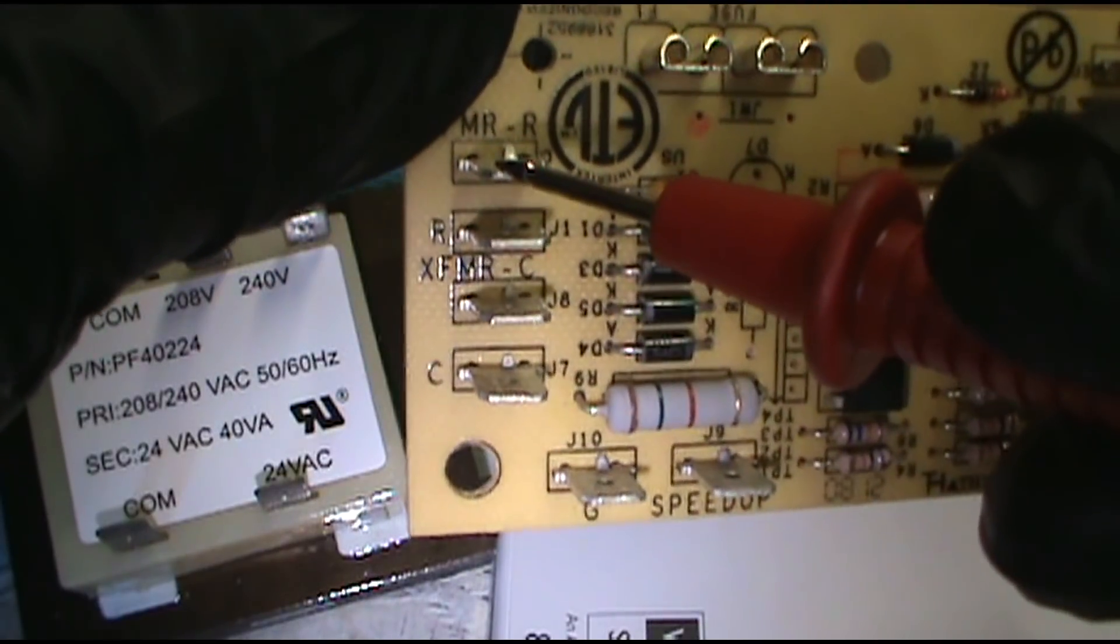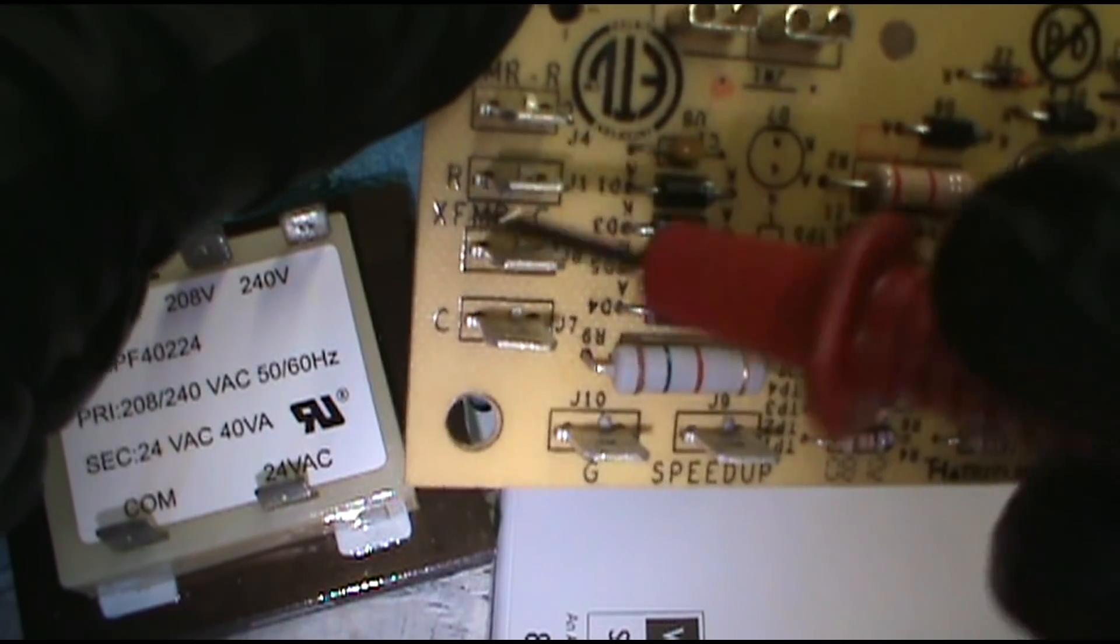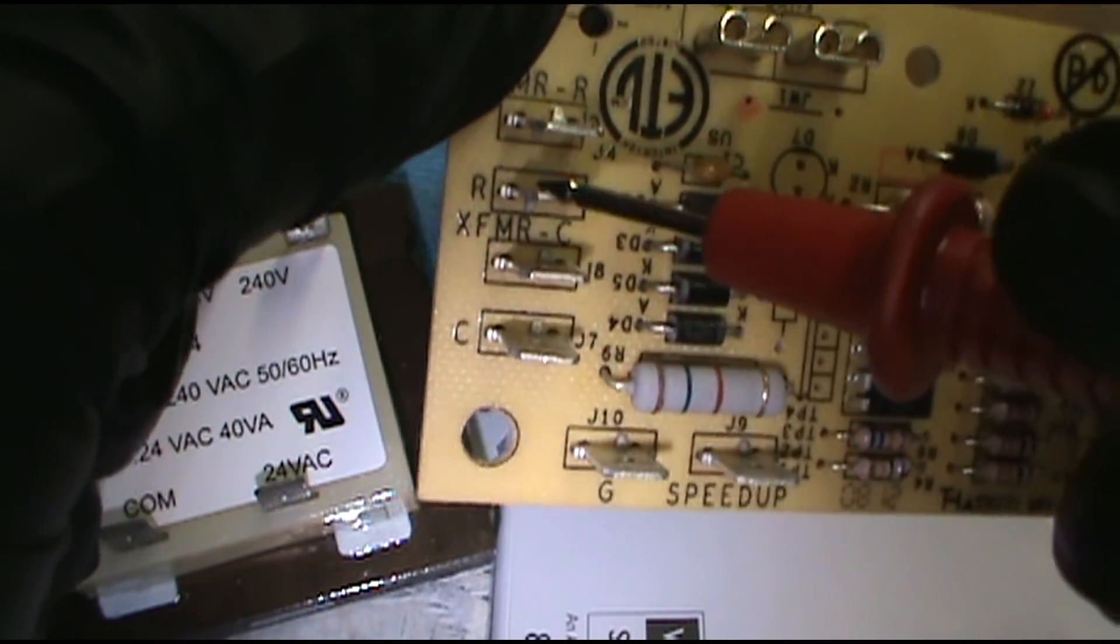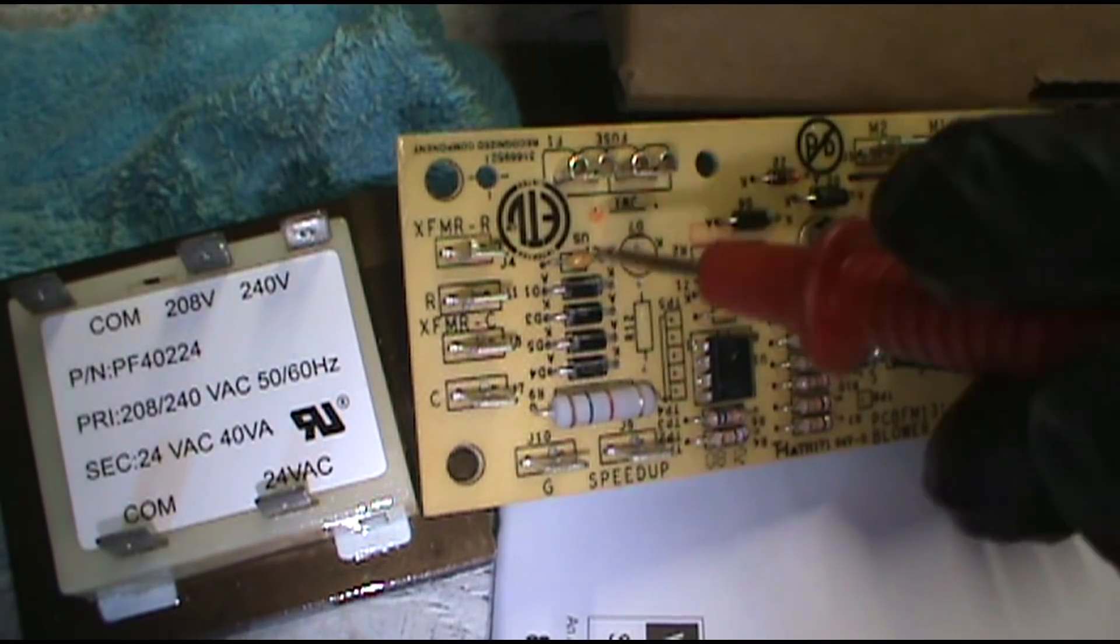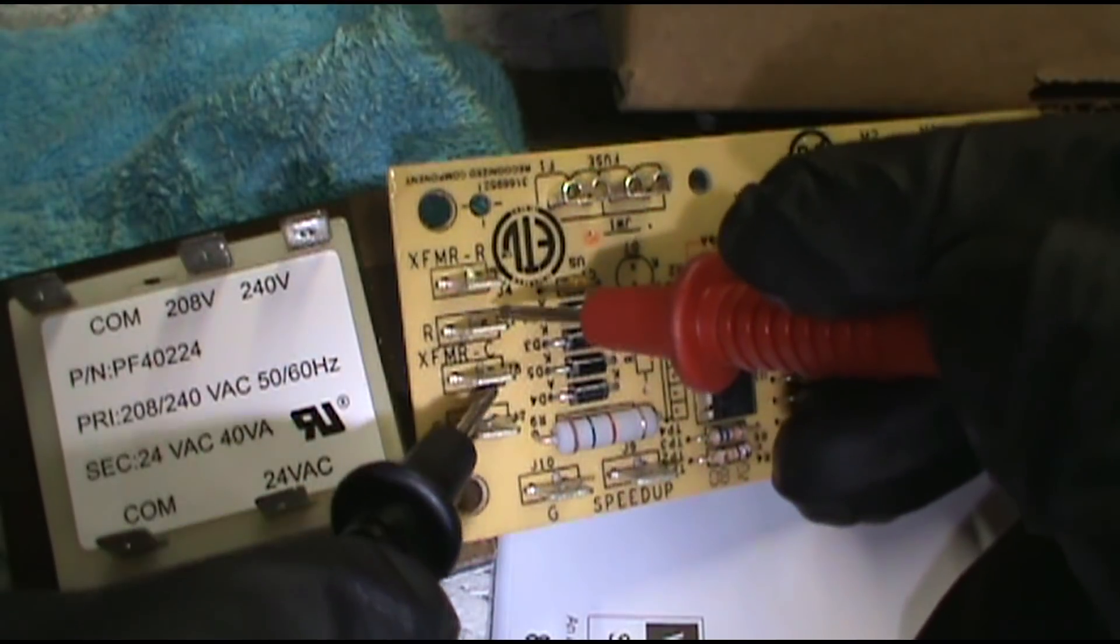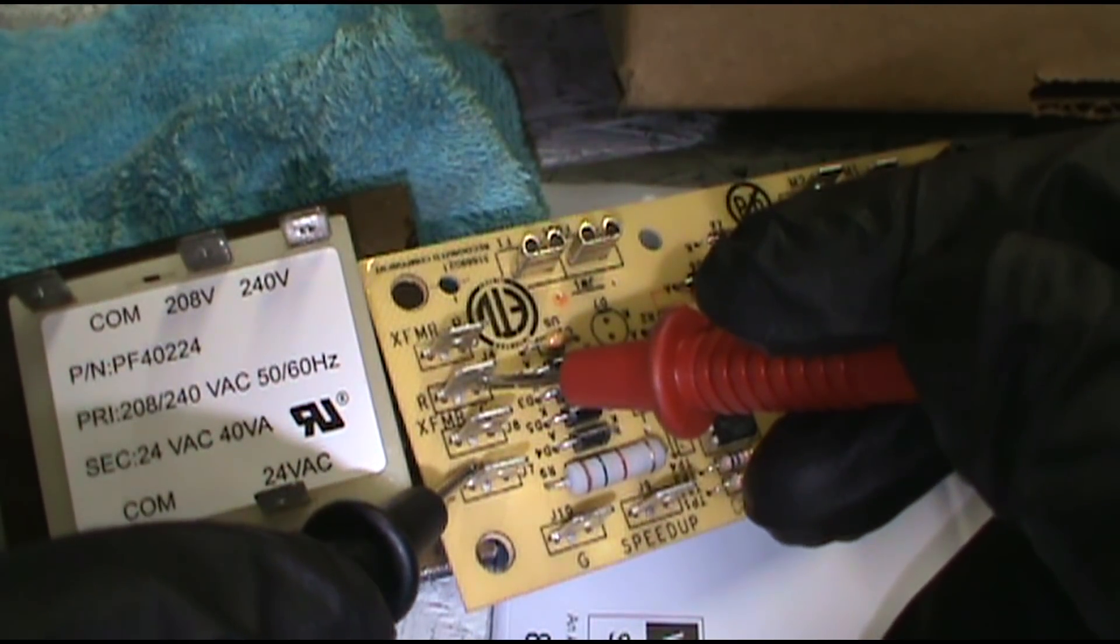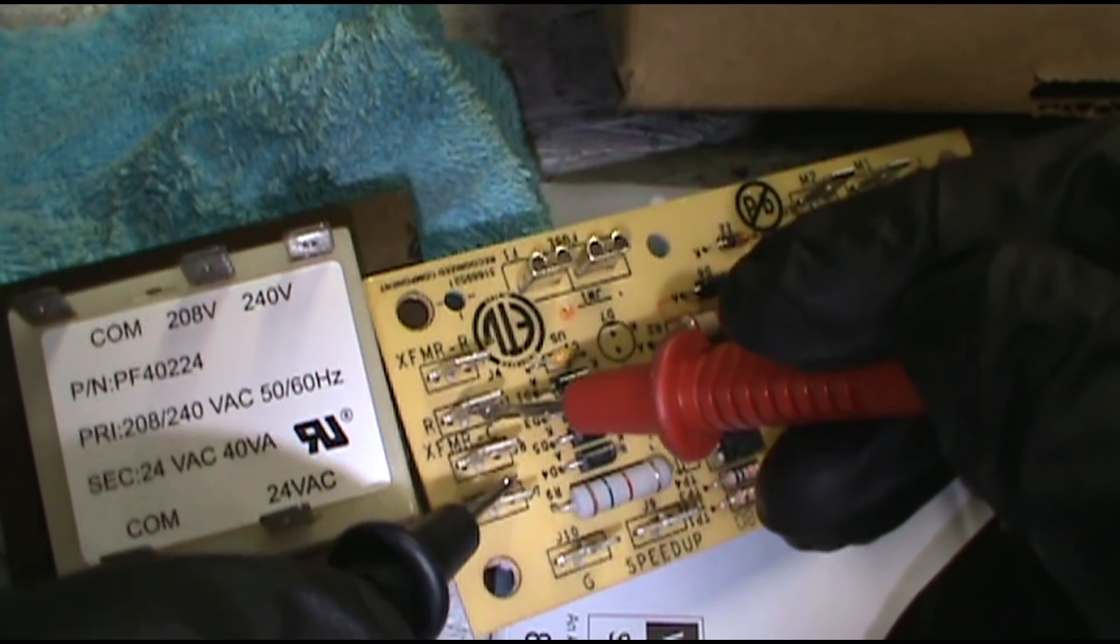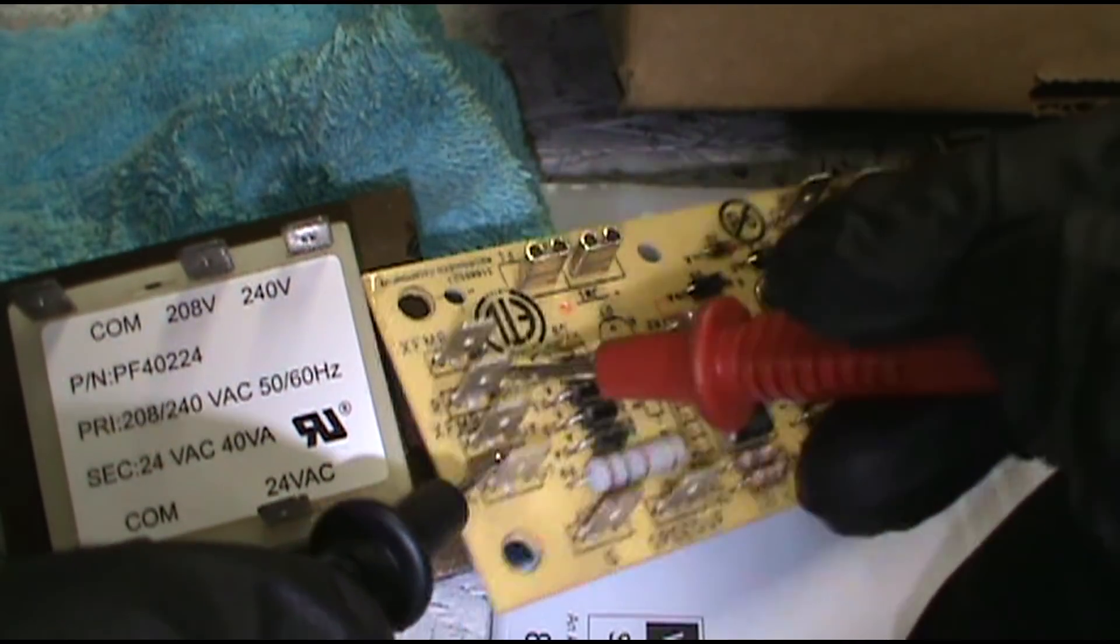What you want to do is test here, make sure you have power coming out. You pull the wires off and you can touch here and here with your voltmeter just like this. Now you're gonna have to do this with the electricity on, so be careful. It's like a deadly game of that board game Operation. Touch R and C, and if you don't have 24 coming out of these terminals, you're gonna need to replace the board. And you can also do continuity as well, and I'll show you.